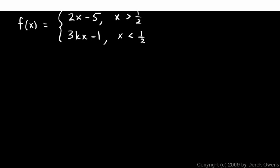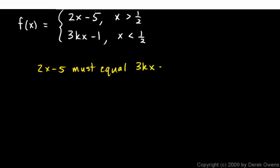And that's this. So I'm going to say these two things have to be equal: 2x minus 5 must equal 3kx minus 1 when x is 1 half.